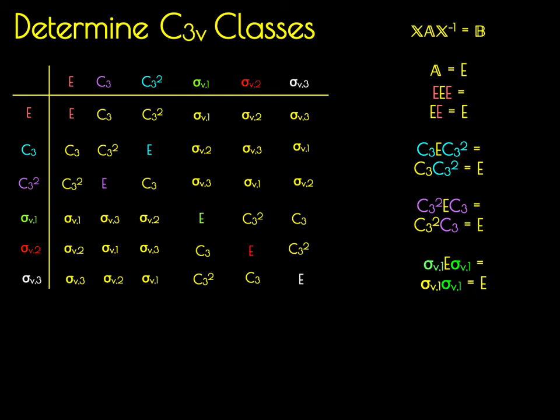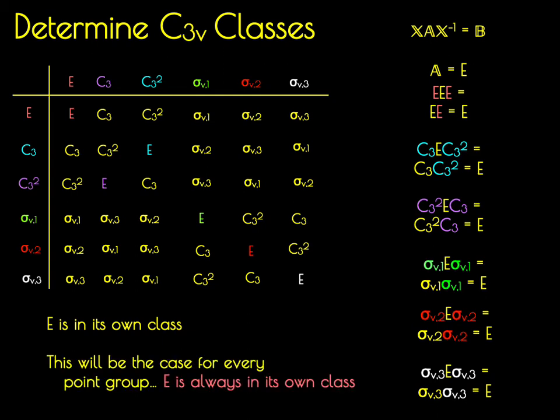E by sigma V2 equals E. E by sigma V3 equals E. What we've just shown is that E is in its own class. This will always be the case. For every single point group, E will always be in its own class.